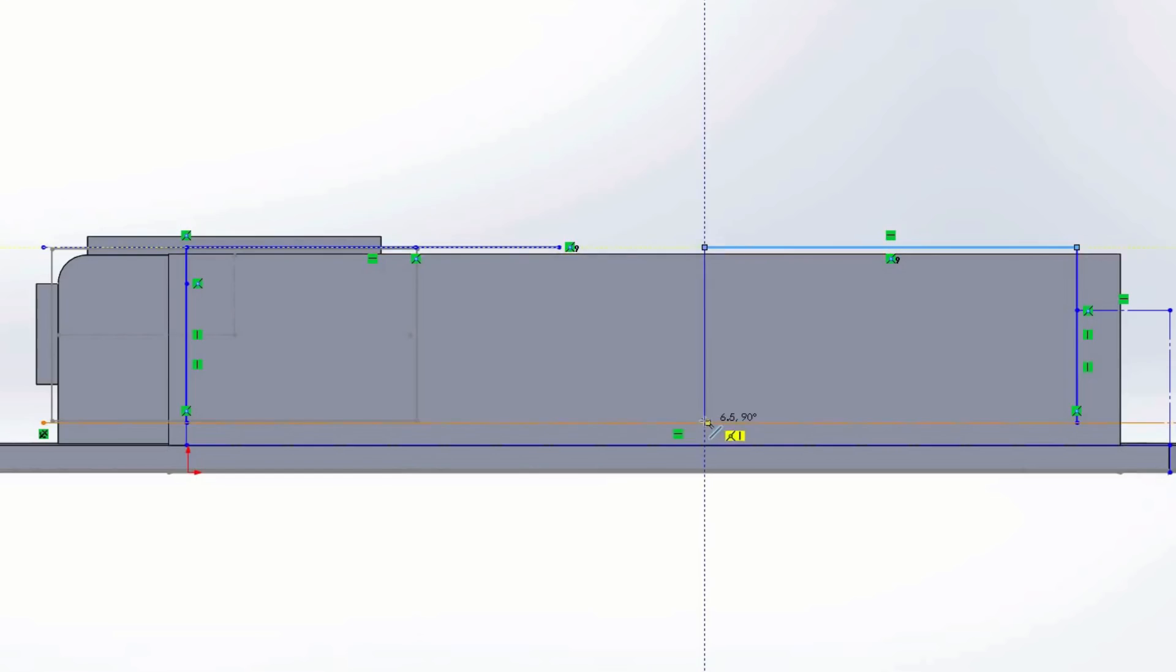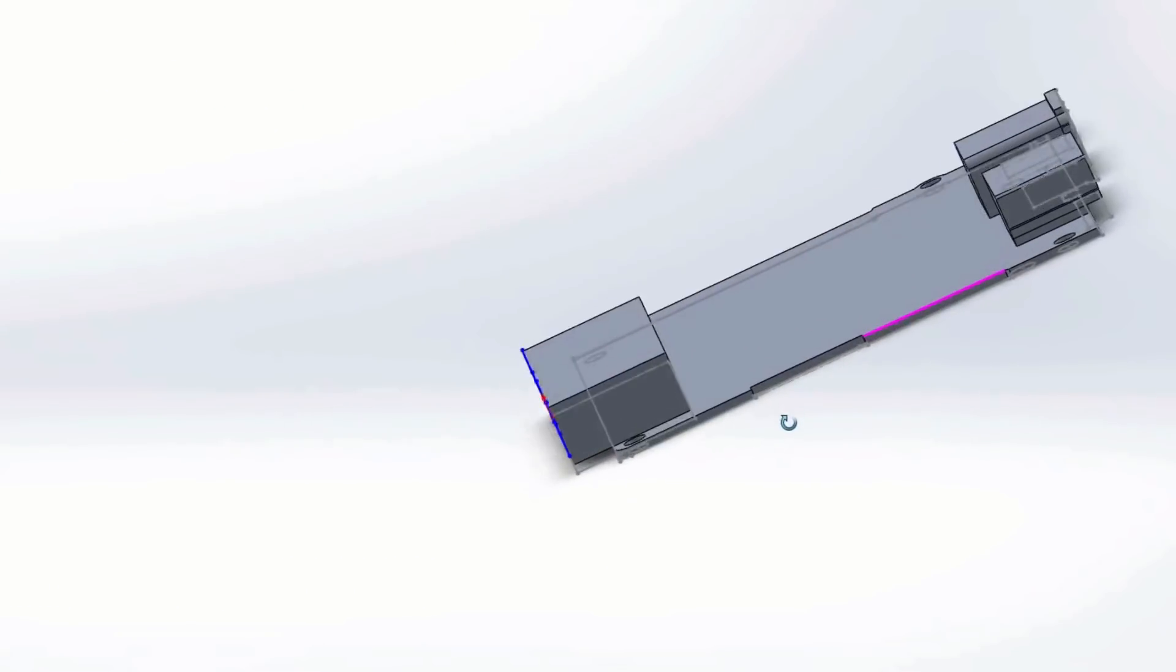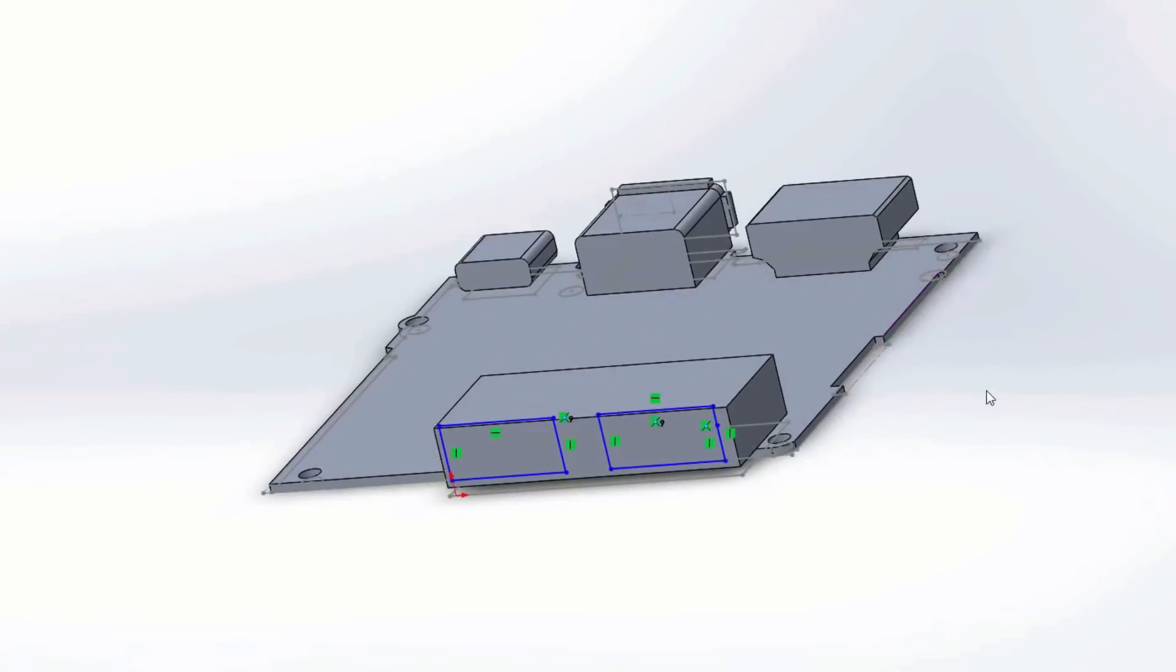The first step is to reproduce the basic features of the circuit board found inside the original Switch dock. Once we know its dimensions, we will be able to quickly design a little support to screw it on.